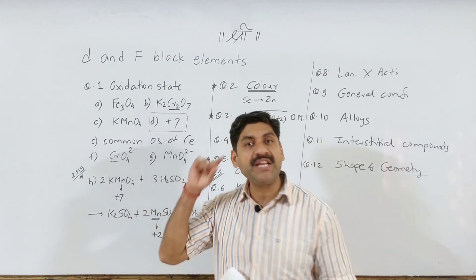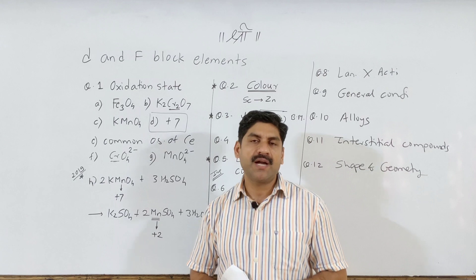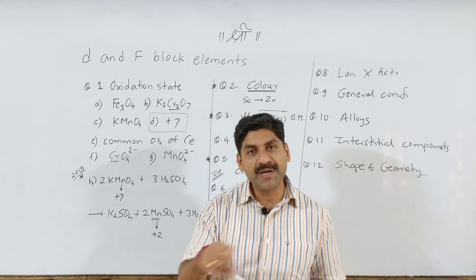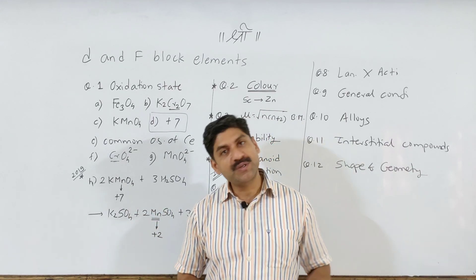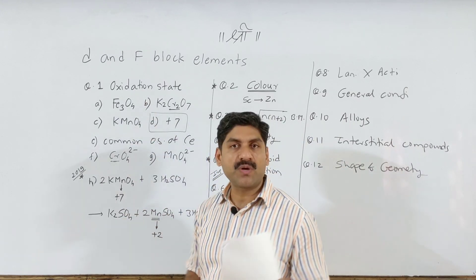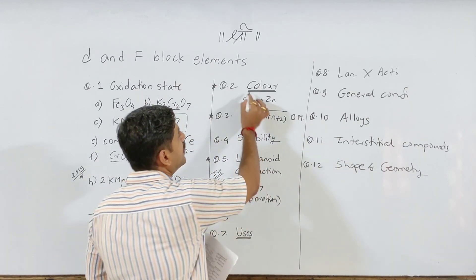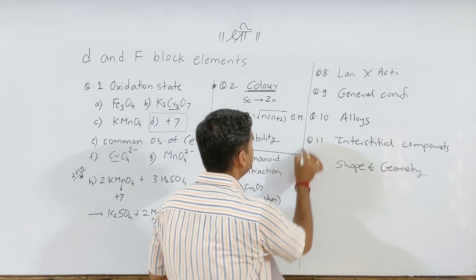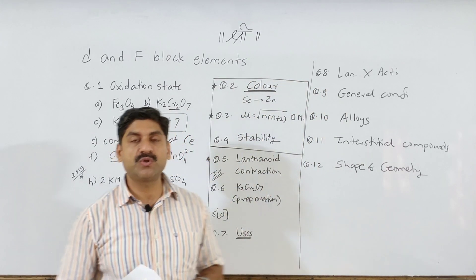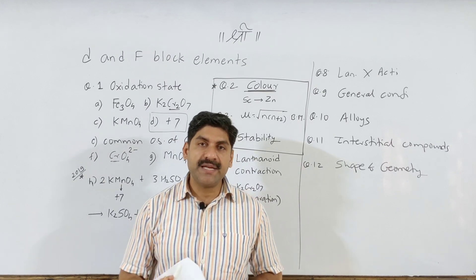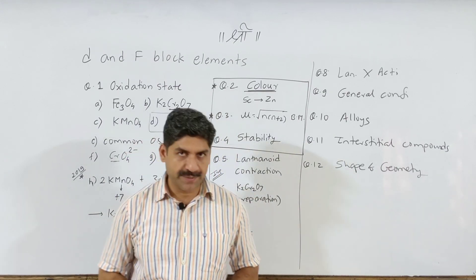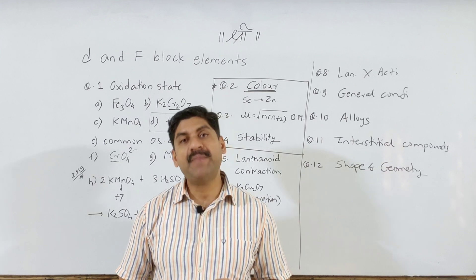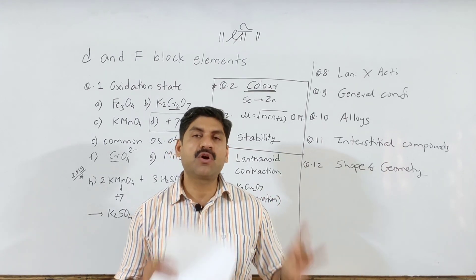Please write the answer in the comment section. The key properties to study are: oxidation state, color, magnetic moment, and stability. The d-block elements are: scandium, titanium, vanadium, chromium, manganese, iron, cobalt, nickel, copper, and zinc.